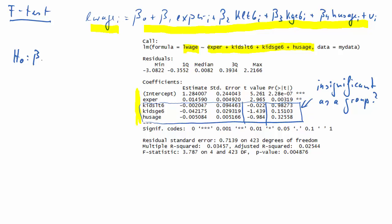So we will test the following null hypothesis. The null hypothesis is that all these three variables are irrelevant, so the associated parameters beta 2 to beta 4 are all equal to 0. The alternative will be that at least one of them is unequal to 0.